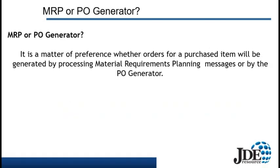The question is: do we want to run our purchase items through the MRP — the Material Requirements Planning System — or the Purchase Order Generator? That's really a matter of preference. The Purchase Order Generator has been useful to companies in streamlining the management of low-cost items. This is really where the benefit of the PO Generator comes in.